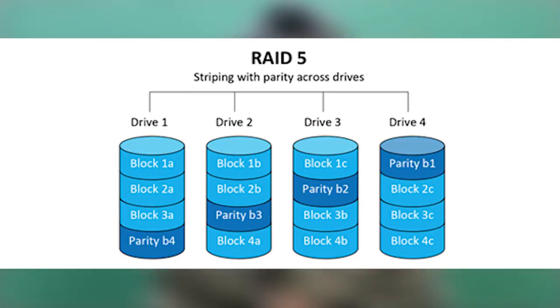Next is the RAID 5 method. This is a common method. If you are using RAID 5, you can have a drive failure and still retrieve the data again — it's easy to retrieve. The minimum requirement is three drives to run a RAID 5 configuration.